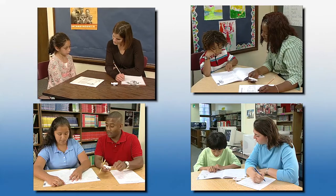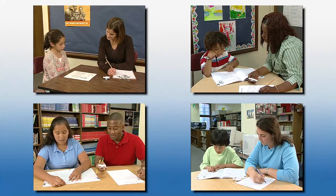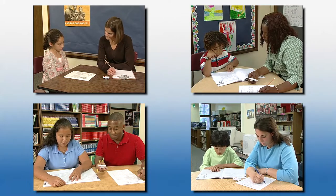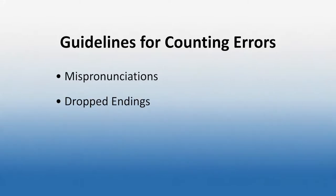To get consistent results, all adults conducting timings at your school need to count errors in the same way. Read Naturally has guidelines for counting errors. In most cases, the guidelines that Read Naturally suggests are probably similar to what you'd expect. For example, mispronunciations, dropped endings, and omitted words all count as errors. In other cases, Read Naturally's guidelines may differ from what you're used to.